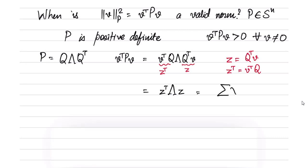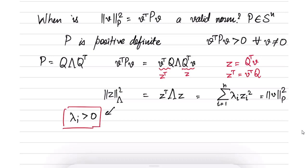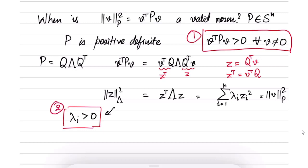With z = Q^T v, we have z^T = v^T Q, so v^T P v = z^T Λ z, which equals Σ λ_i z_i². Going back to the weighted norm, this is a valid norm-square of z whenever all λ_i are strictly positive. This gives another equivalent definition of positive definiteness.